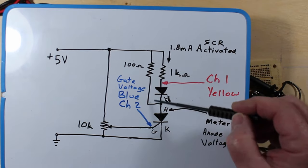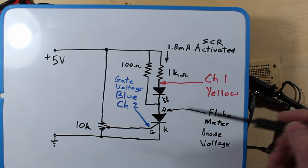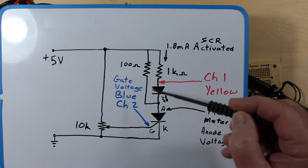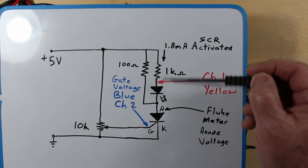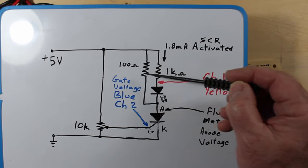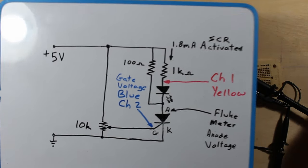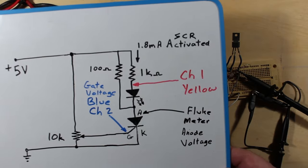So that'll give us some more current through it. It's still not a lot of current for what this SCR can handle, but that 100 ohms will provide significantly more than the 1.8 milliamps that goes through here when we don't have that in there. So let's have a look at its operation.